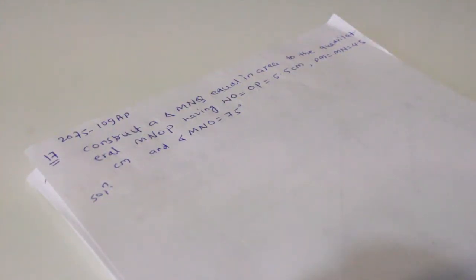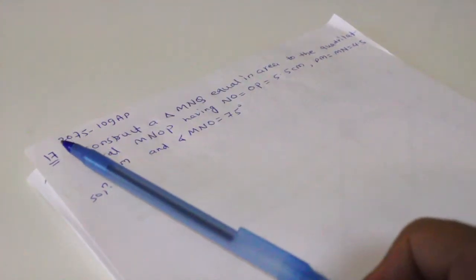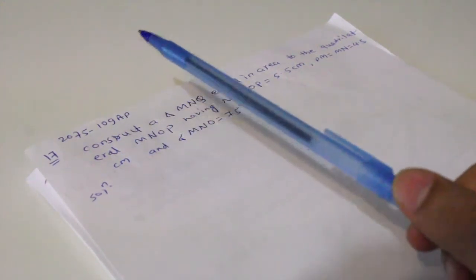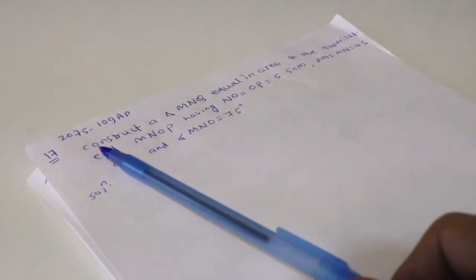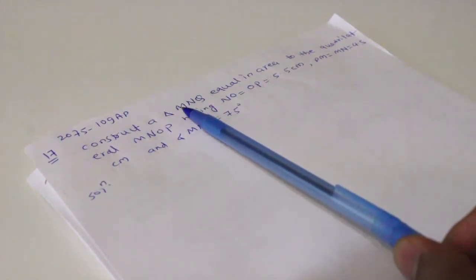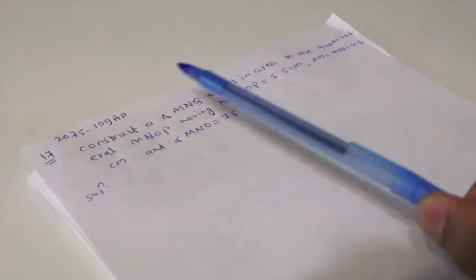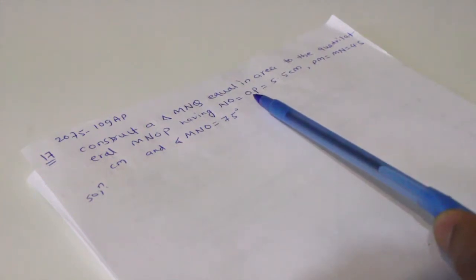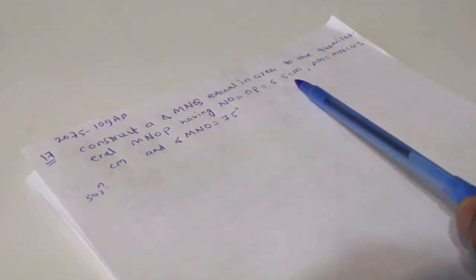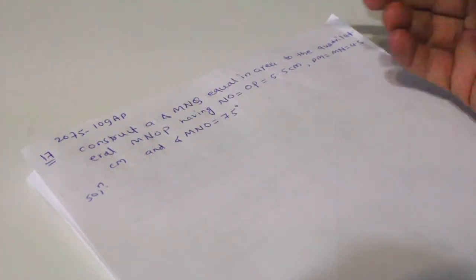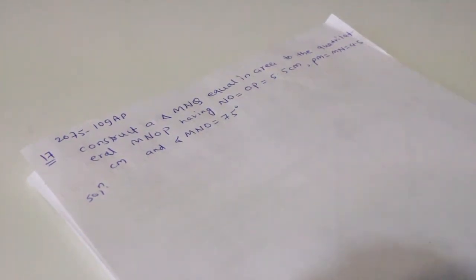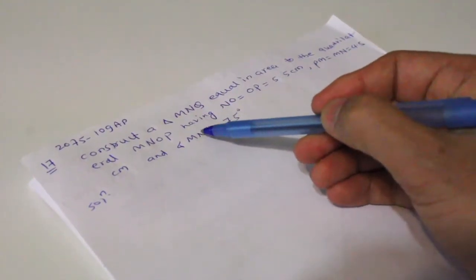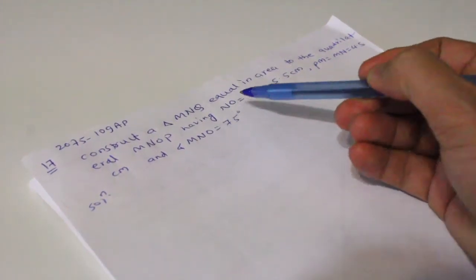Alright, this is question number 17 from 2075109AP. The question states: construct a triangle MNQ equal in area to the quadrilateral MNOP, having NO equals to OP equals to 5.5 cm, PM equals to MN equals to 4.5 cm, and angle that formed at the point N is 75 degrees.